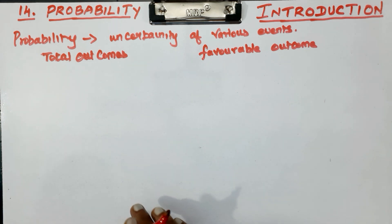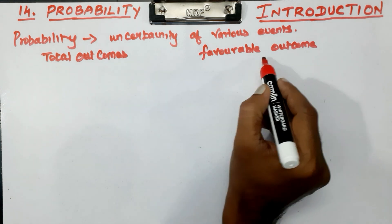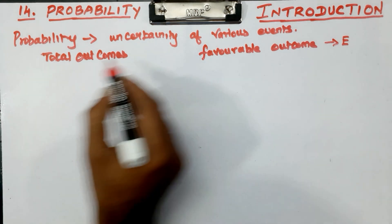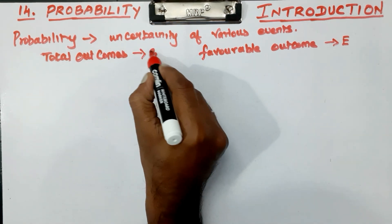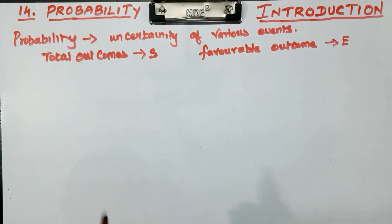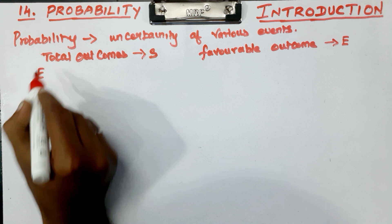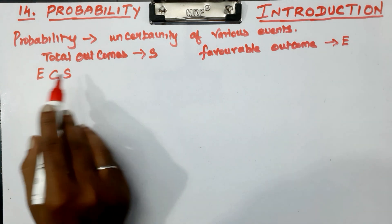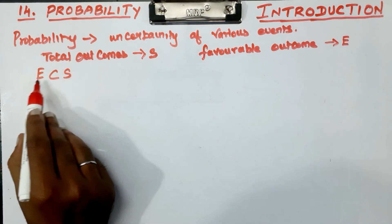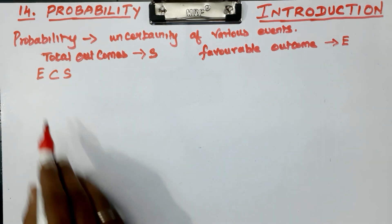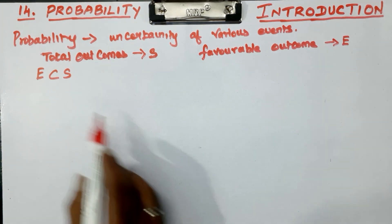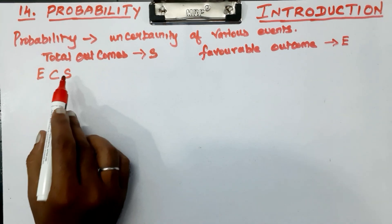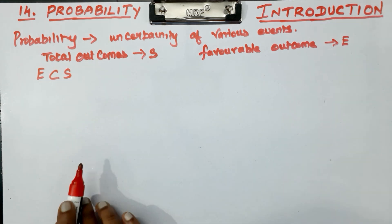How do you express a favorable outcome? That is called the event, represented by E. The total outcomes form the Sample Space, represented by S. This event E is contained in S. E is a subset of S - the event is always contained within the sample space.